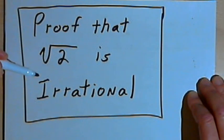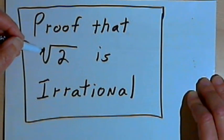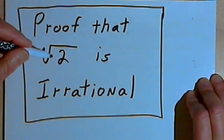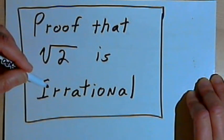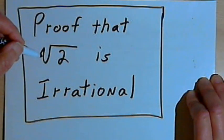And then at the end of the video, I'm going to show you how you might be able to do a proof that any root of any prime number is an irrational number. But let's start out with the square root of 2.